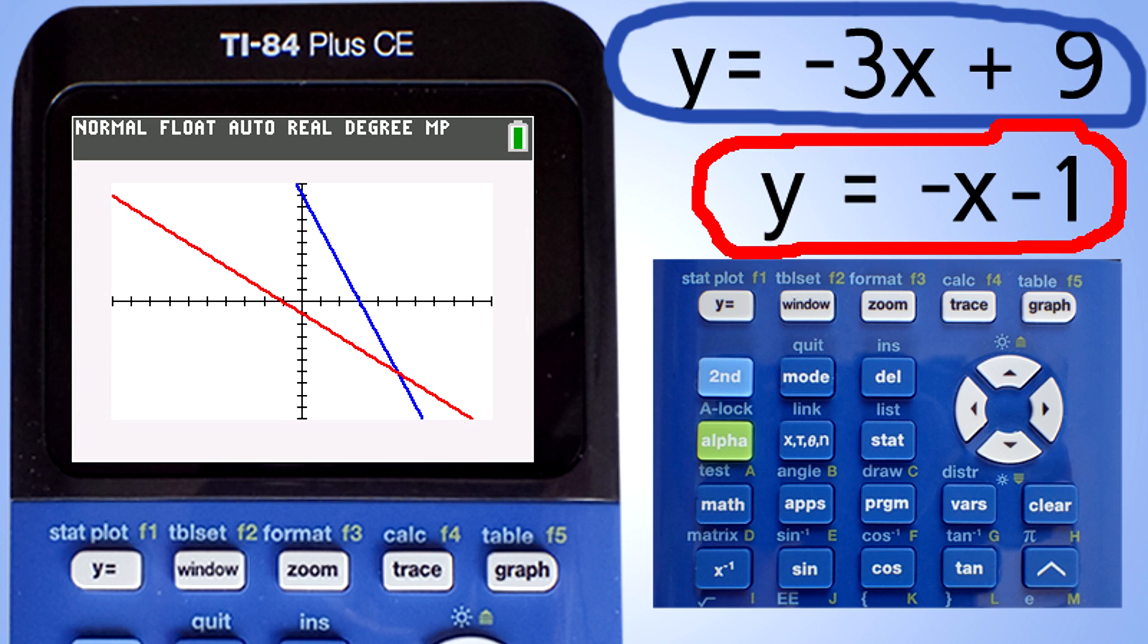Now the answer to this system of linear equations is where the two lines intersect. We can find exactly where these two lines intersect by using the trace button here. Press the trace button. This appears. This little x-like mark appears on the blue line, and it shows the equation of this blue line here.